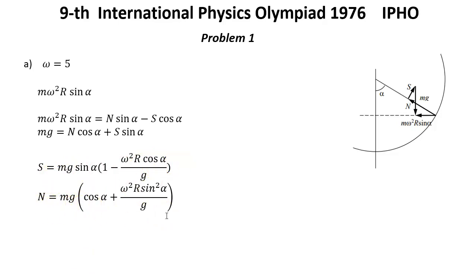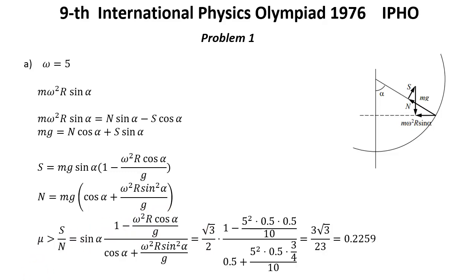Force of friction S equals this expression and the normal force equals this expression. And the block does not slip down if we have mu no greater than force of friction over normal force, which is this expression. And after putting numbers we will get 0.2259. In this case there must be at least this friction to prevent slipping. So that was the solution for question A.